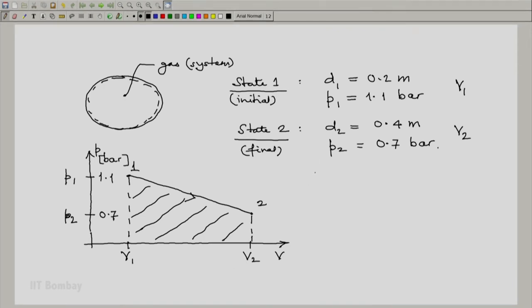We know that the volume of any sphere equals π/6 d³, where d is the diameter of the sphere. So V1 is π/6 d1³, which becomes π/6 × (0.2)³ meter cube.